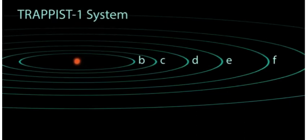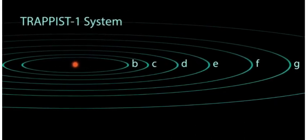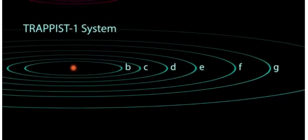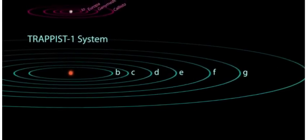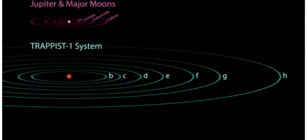That's because TRAPPIST-1 is only a little bigger than Jupiter, and the TRAPPIST-1 planets orbit only a little farther apart than Jupiter's moons. Interplanetary trips here would be measured in days, not months or years like in our solar system.